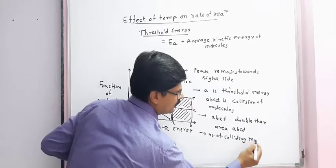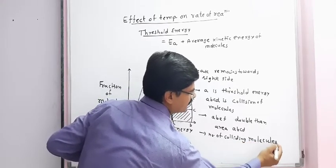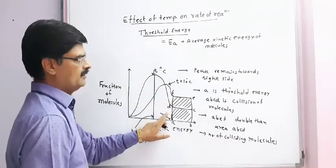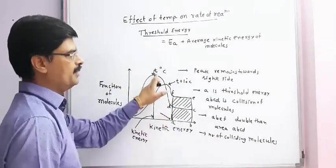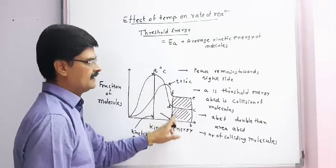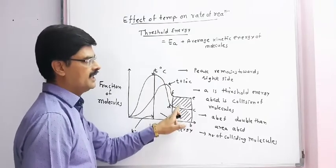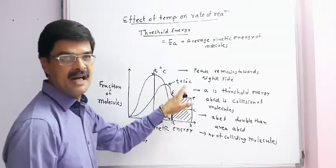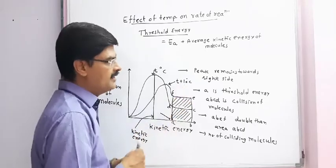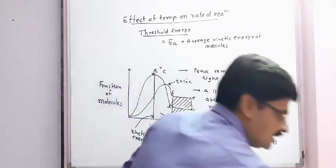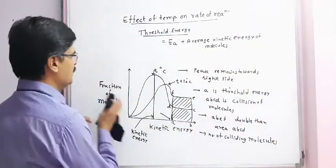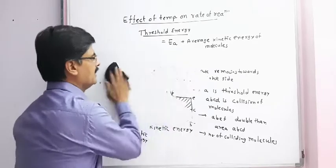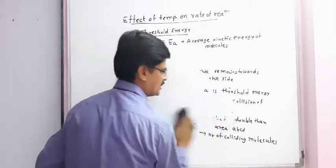It means we can say that the number of colliding molecules becomes double. At temperature T if it is X, then it is nearly 2X when temperature is raised by 10 degree Celsius. Now we will study the quantitative relation between temperature and rate constant.